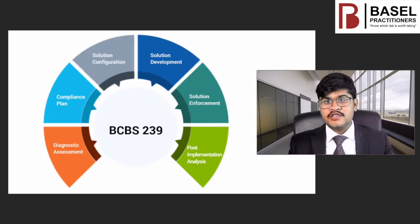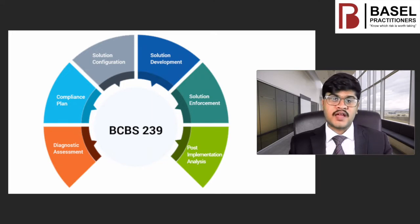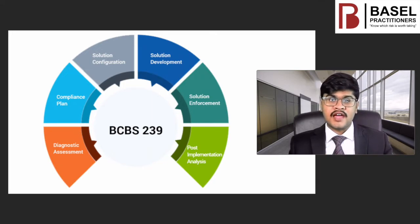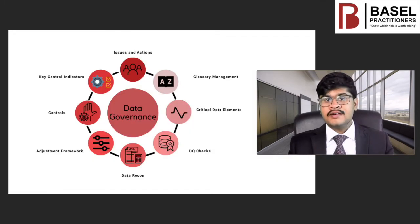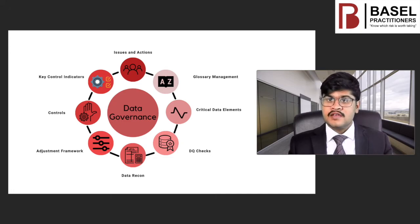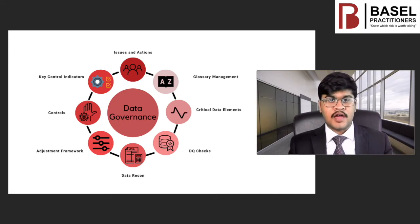BCBS 239 is the set of best practices banks need to follow for better risk data aggregation capabilities and reporting practices. With that, let us now see some of the different components of data governance and how they play a role in data management.